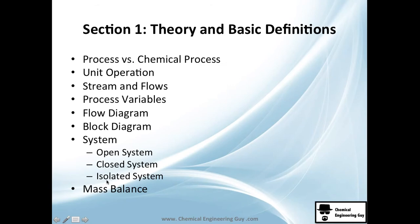In section one — theory and basic definitions — we'll understand what a process is and the difference between a chemical process and a unit operation. Unit operations are very important: a pump is one unit operation because it increases pressure, a reactor is a unit operation because it reacts something, a dryer is a unit operation because it dries something, and so on.